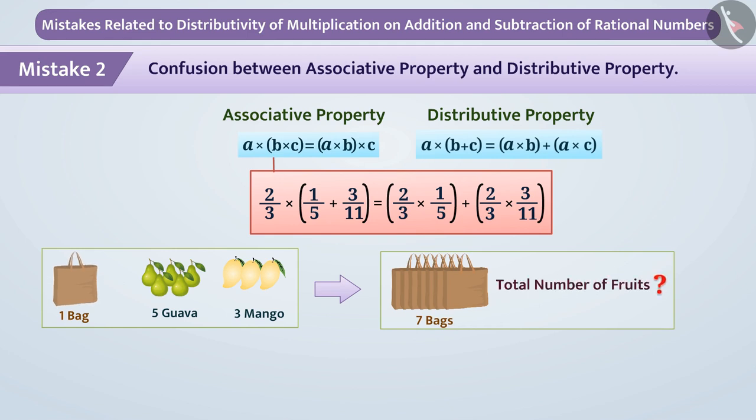We can add the number of fruits in the bag and then multiply these by 7. That is 7 multiplied by 5 plus 3, or we can add them by knowing the number of guava and mango in all bags separately.